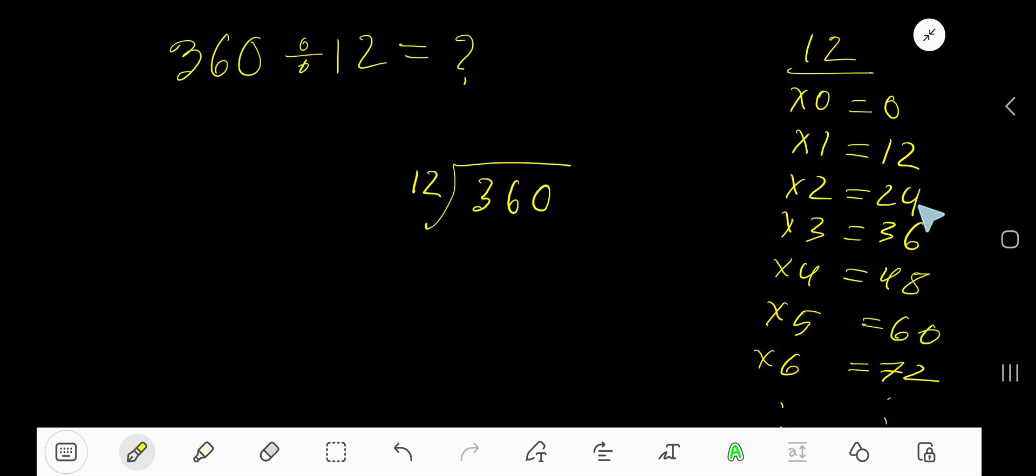12 plus 12 is 24, 24 plus 12 is 36, 36 plus 12 is 48, 48 plus 12 is 60. This is the way to find out the multiplication table of 12. 12 goes into 3 how many times? 0 times, as 3 is less than 12.